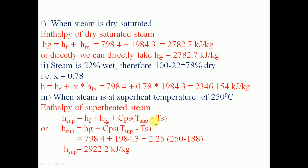That additional heat is Cps multiplied by the temperature difference, that is superheated temperature minus saturation temperature. So enthalpy of superheated steam H = HG + Cps × (T_sup − T_sat) = 798.4 + 1984.3 + 2.25 × (250 − 188), giving the enthalpy of superheated steam as 2922.2 kJ/kg.